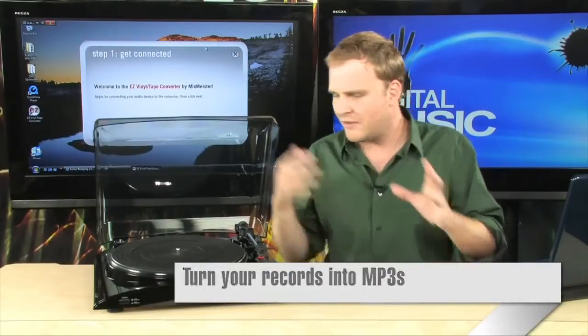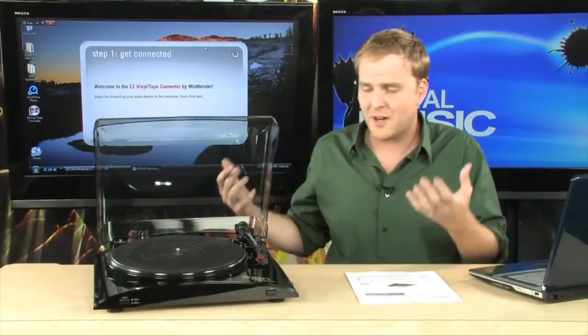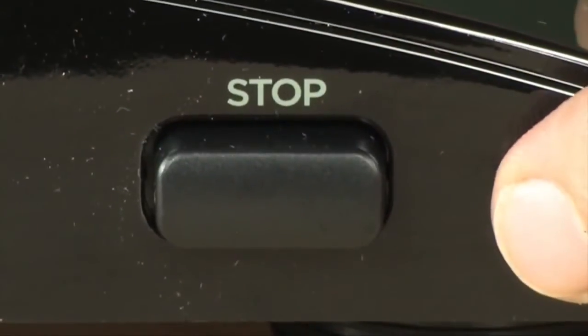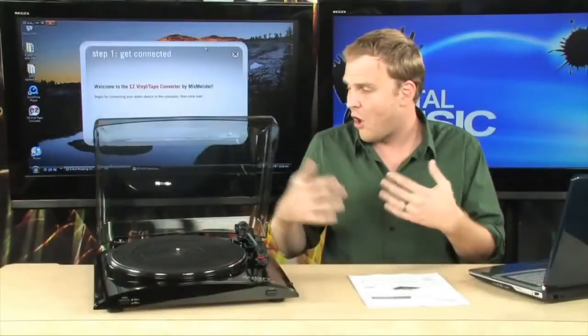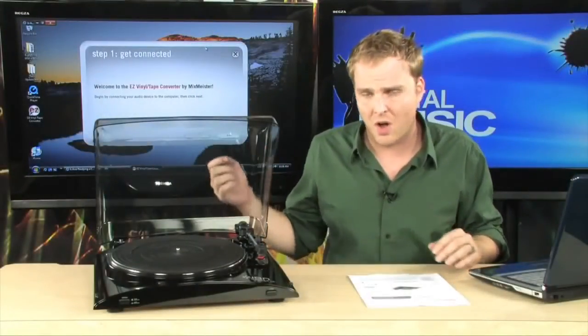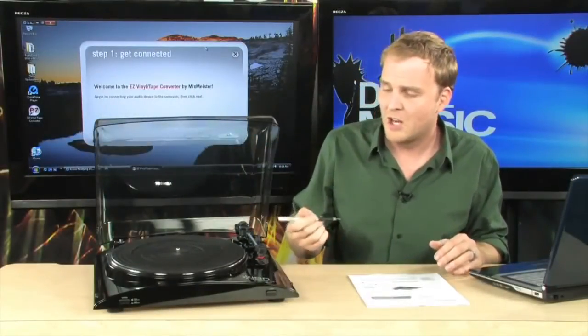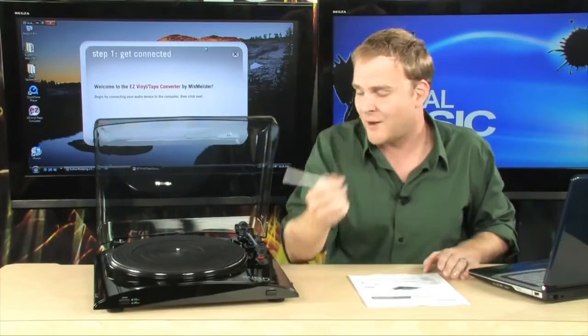But first of all, this is the Ion Profile LP. It is an ultra basic looking turntable. On the front, you have an on-off switch, and you have a 33 RPM or 45 RPM switch. And that's all there is in terms of buttons on this turntable. You, of course, have all the normal accoutrements.